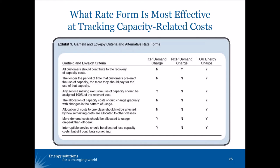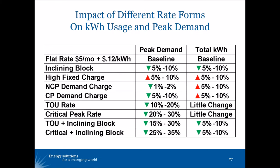I also did some work on one particular utility looking at the impact of different rate forms on both total kilowatt-hour usage and on peak demand. This was an analysis done based on a range of elasticity estimates. We started with a baseline of a flat rate of $5 a month and 12 cents a kilowatt-hour, then looked at an inclining block rate design, a high fixed charge rate design, non-coincident peak demand charge, coincident peak demand charge, and time of use rate.